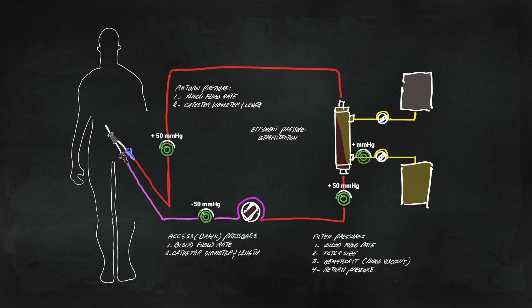Effluent pressure sensor, which sits between the membrane and dialysate flowing out, is a function of UF rate prescribed and membrane flux characteristics.